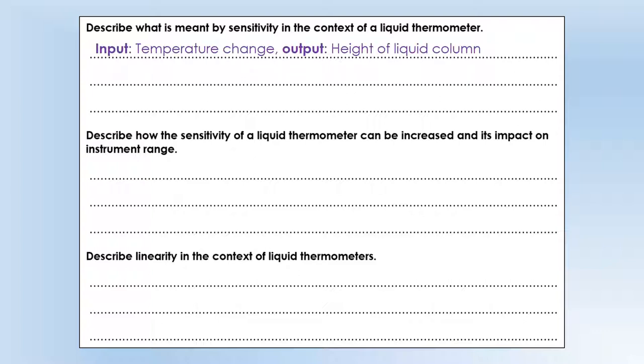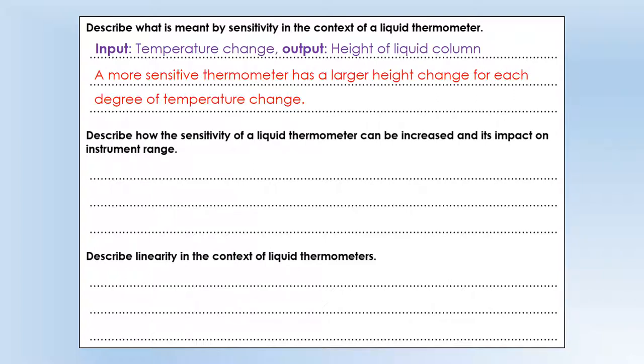With a thermometer the input is a temperature change. We use the thermometer to measure temperature. And the output is the height of a liquid column. That's what actually tells us what the temperature is. So when we use the word input and output in the definitions this is what we're referring to. So a more sensitive thermometer has a larger height change for each degree of temperature change. So let's say a thermometer has one millimeter height change for one degree temperature change and another one has two millimeters of height change for the same temperature change. That's more sensitive.